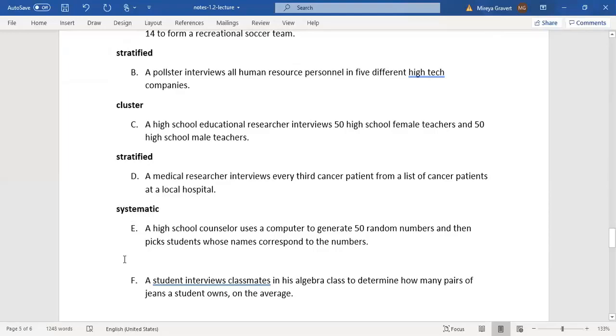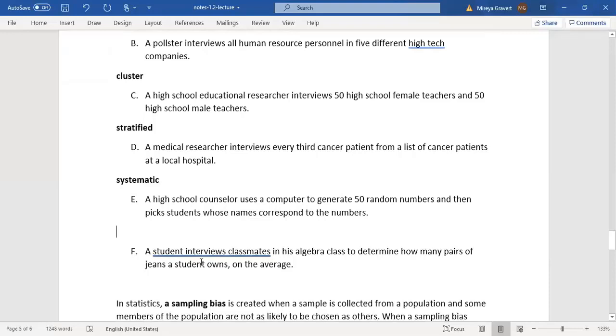E: A high school counselor uses a computer to generate 50 random numbers and then picks students whose names correspond to the numbers. This is an example of a simple random sample.